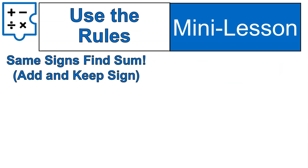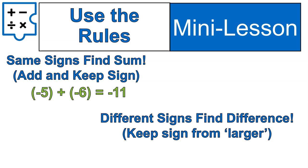Let's look at the rules again for solving it. If you do have two negatives, negative 5 plus negative 6, then you keep the sign and add the numbers. If the signs are the same, find the sum. If the signs are different, you subtract or find the difference.